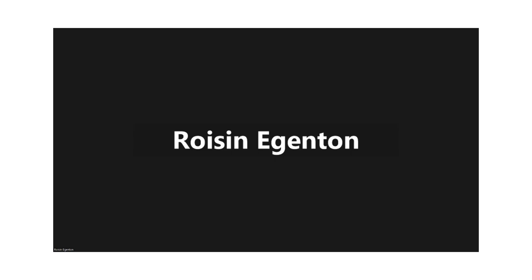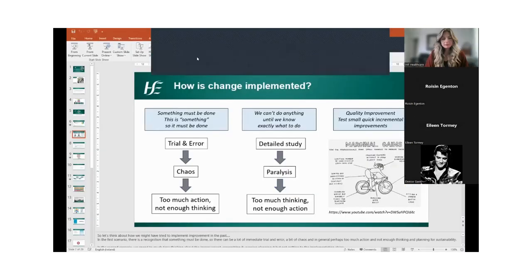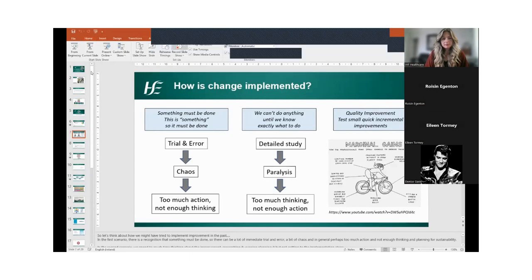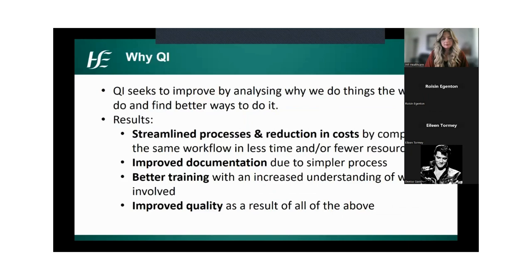It's about aggregating incremental changes — making those small incremental tests of change and letting them build until you have phenomenal results in a short period of time. QI seeks to improve by analyzing why we do things the way we do and finding better ways to do it. The results are streamlined processes and reduction in cost, improving documentation due to simpler processes, better training due to increased understanding, and improved quality as a result of all the above.